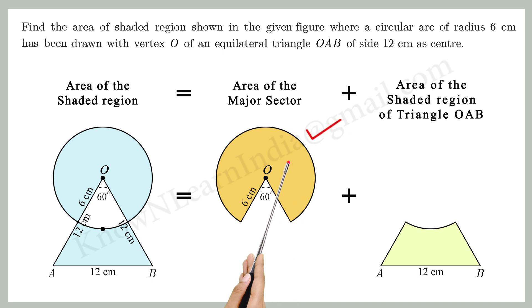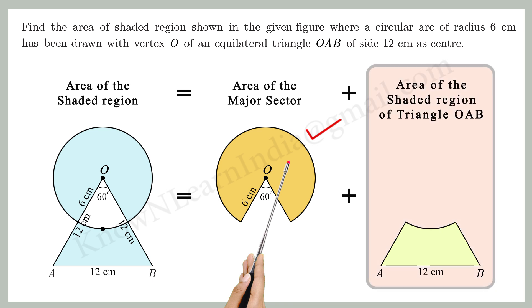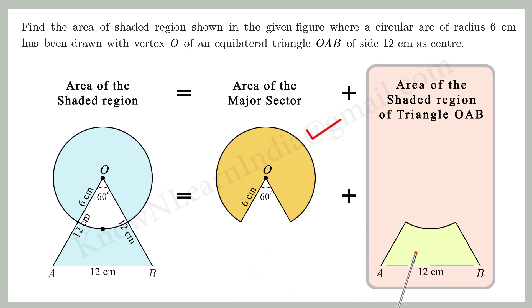With the given information, we can find out the area of the major sector of the circle. Then we have to find out the area of the shaded region of the triangle OAB. How can we do that? Let's find out.